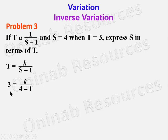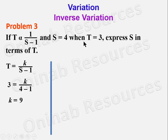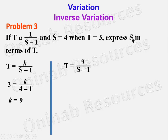To get the value of k: 4 − 1 = 3, and 3 × 3 = 9, so k = 9. We first create the relationship between t and s by substituting k into the relation, giving t = 9/(s − 1).